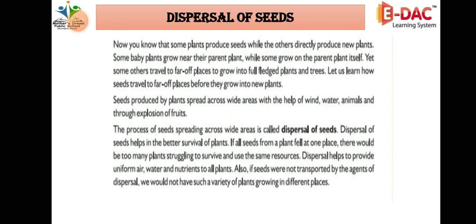As you know, some plants produce seeds while others directly produce new plants. Some baby plants grow near their parent plant, while some grow on the parent plant itself. Some plants, like the neem tree, have baby plants that travel to far-off places to grow into a full-fledged plant and tree.